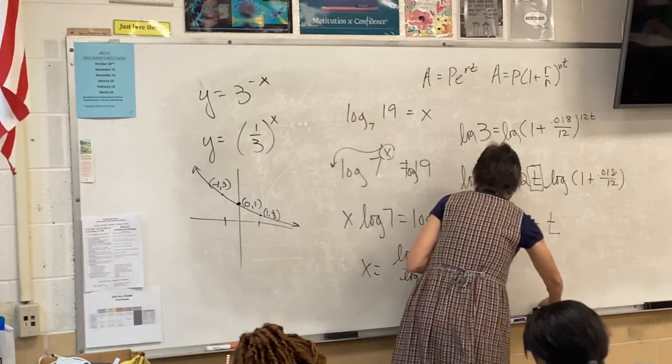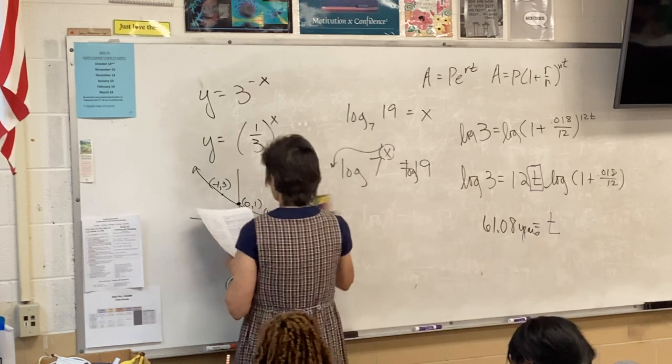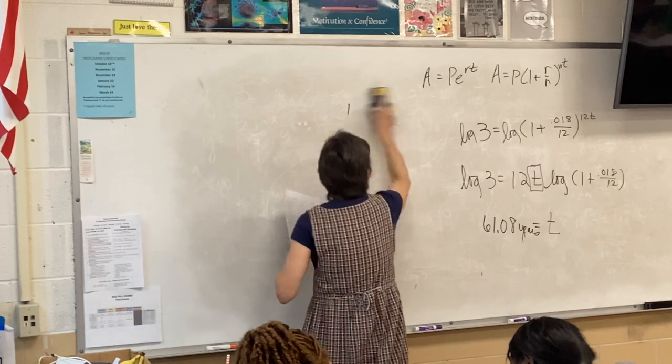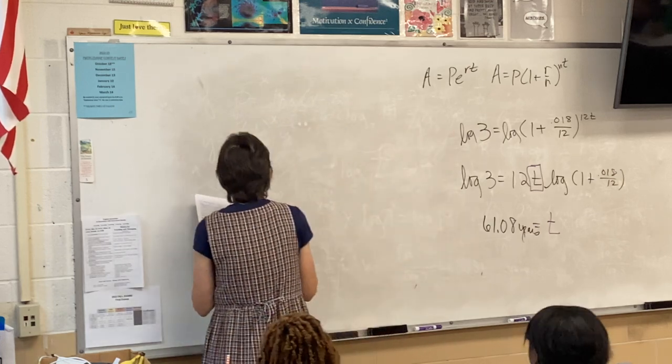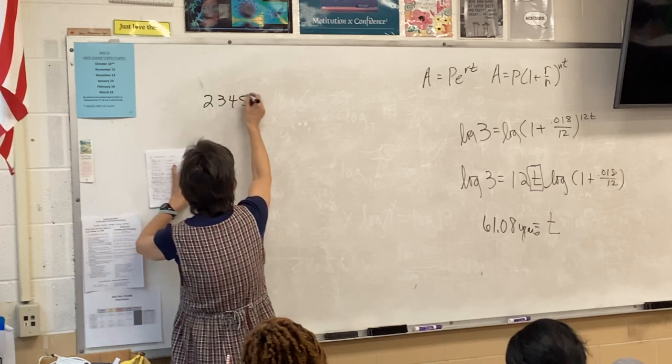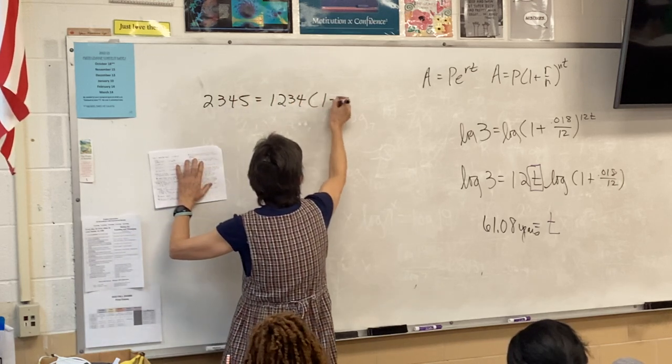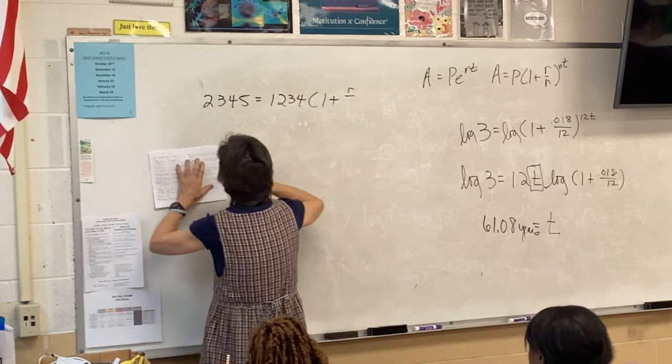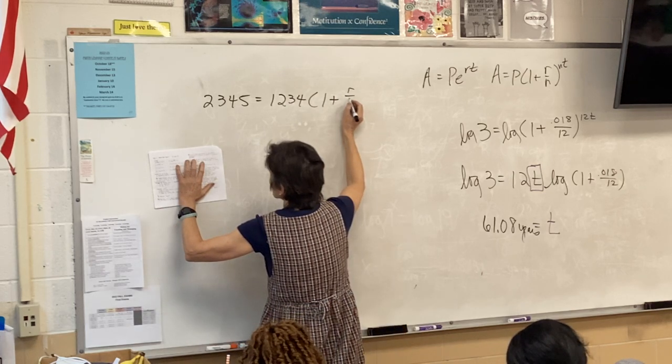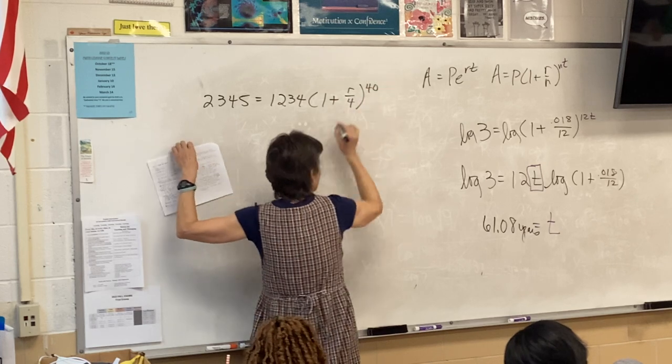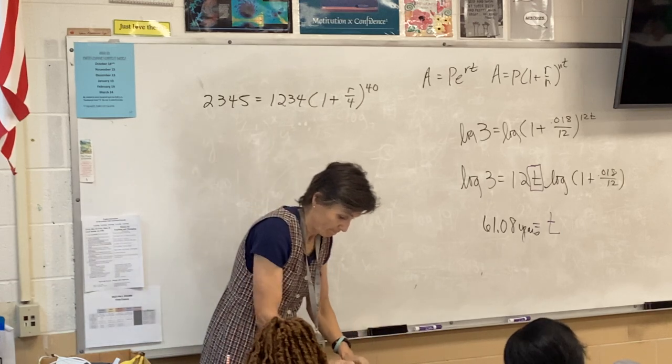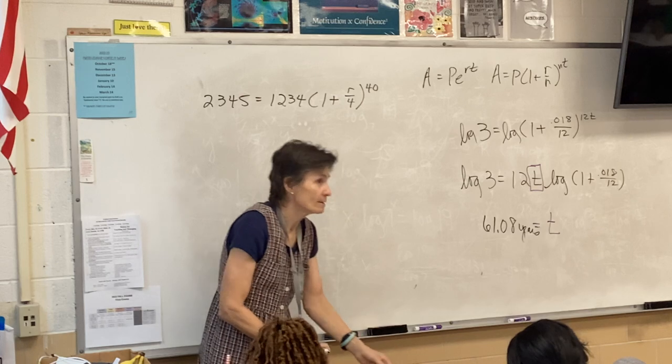Number 7. Find the interest rate required to grow this to this. So the interest is compounded quarterly. What formula? Second one again. So my A is 2345, my P is 1234, my R is the question, my N is 4, and then that's going to make my exponent 40. Are we going to use logarithms to solve this problem? No. Don't. The only time we need logarithms is when our unknown is the exponent. It is not.